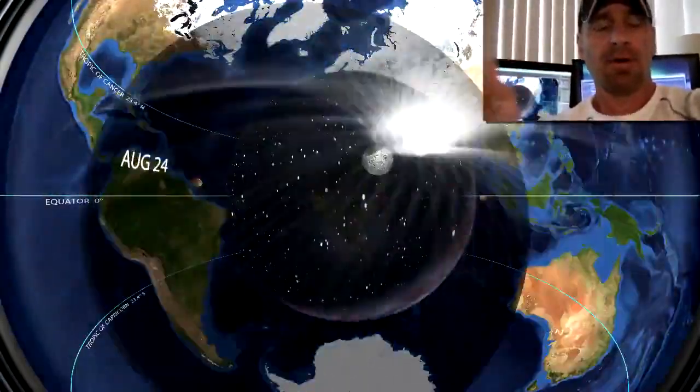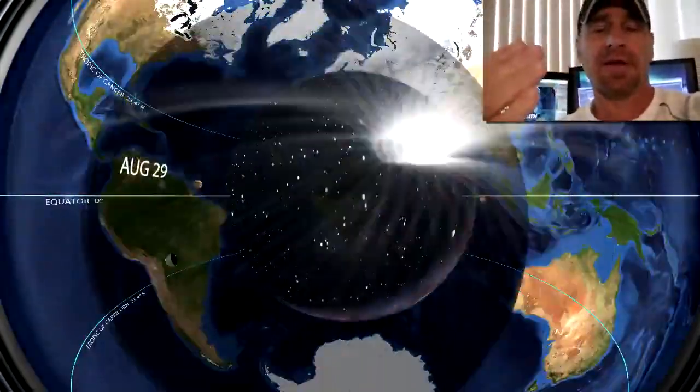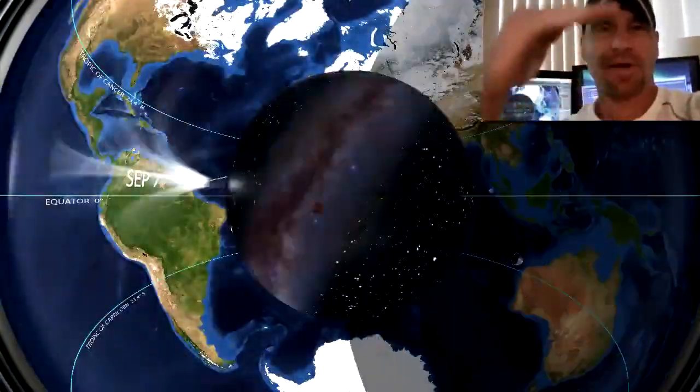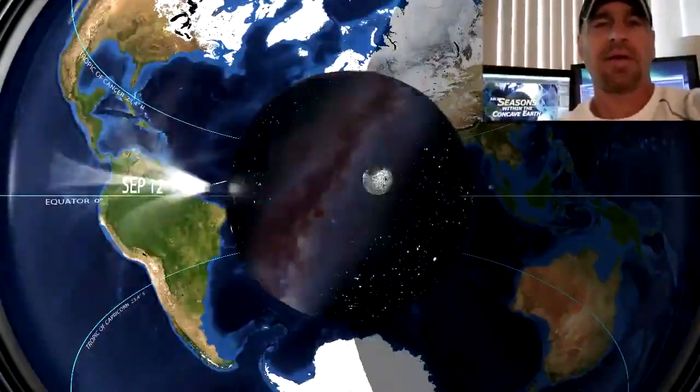So in nature you can conclude that if something is orbiting around something magnetically and it's oscillating north and south like that, there's going to be acceleration and deceleration.